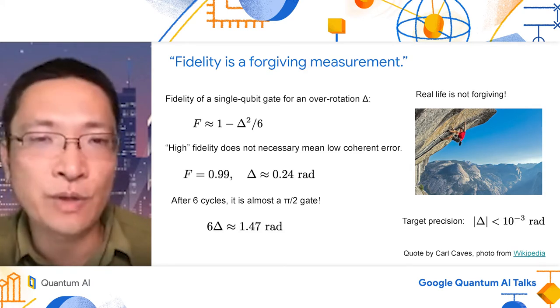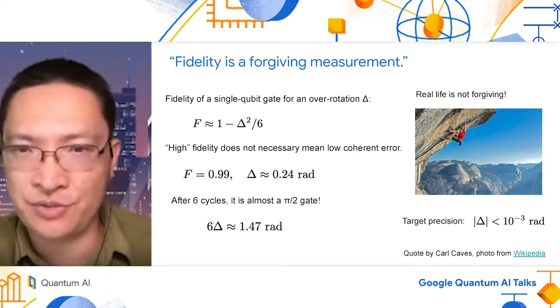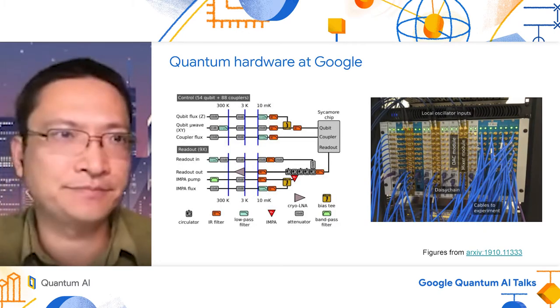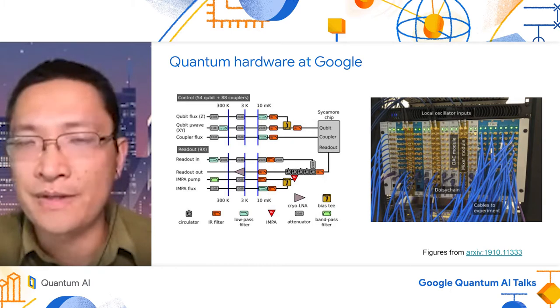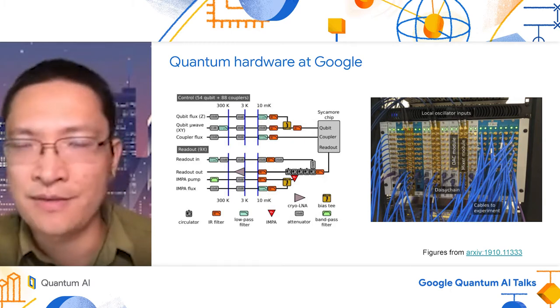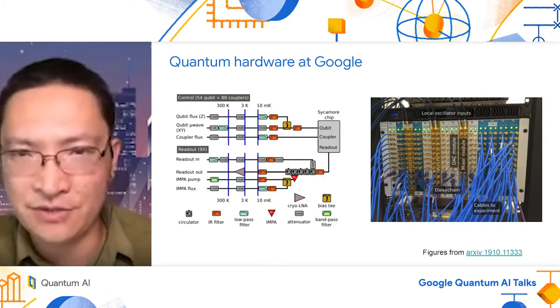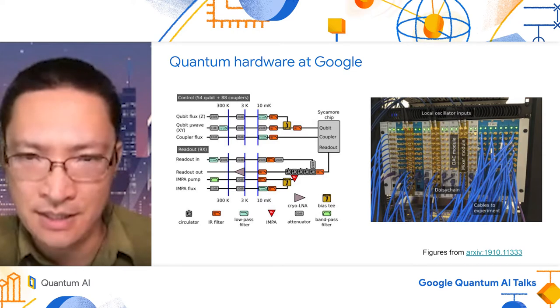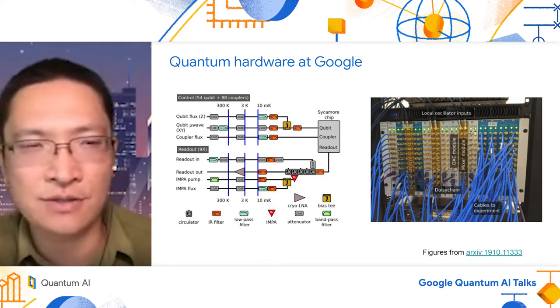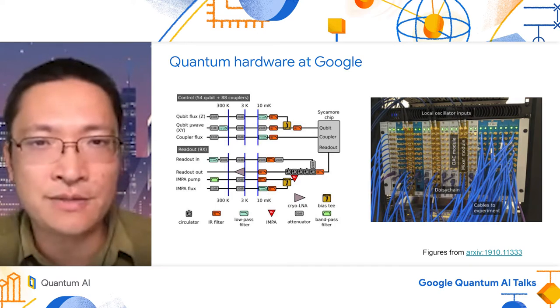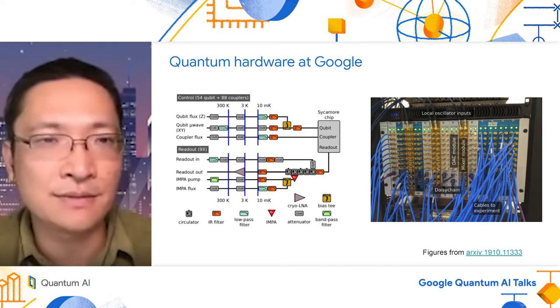Real life is not forgiving. And we will have to target a precision of less than 10 to the minus 3 radians. With the kind of hardware at Google, the room temperature is fluctuating, and the control signals in the control lines can talk to each other. And there are also pulse distortion and gate bleeding.